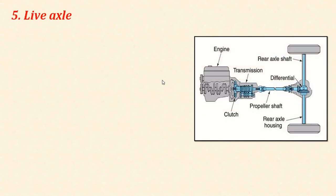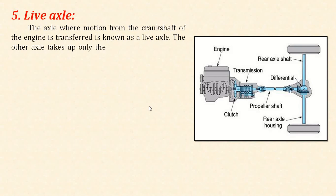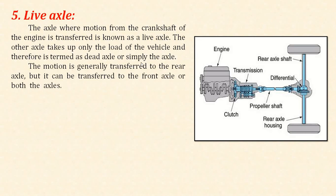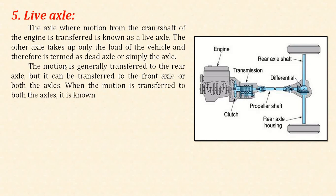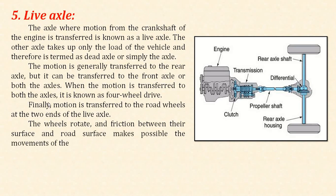The last component is the live axle. Through the differential we can transmit power to the live axle — the axle where the motion of the crankshaft of the engine is transferred is known as the live axle. The other axle takes up only the load of the vehicle and is termed the dead axle. Motion is generally transferred to the rear axle, but it can be transferred to the front axle or both axles. When motion is transferred to both axles using a transfer case, it is known as four wheel drive. Finally, motion is transferred to the road wheels at the two ends of the live axle.